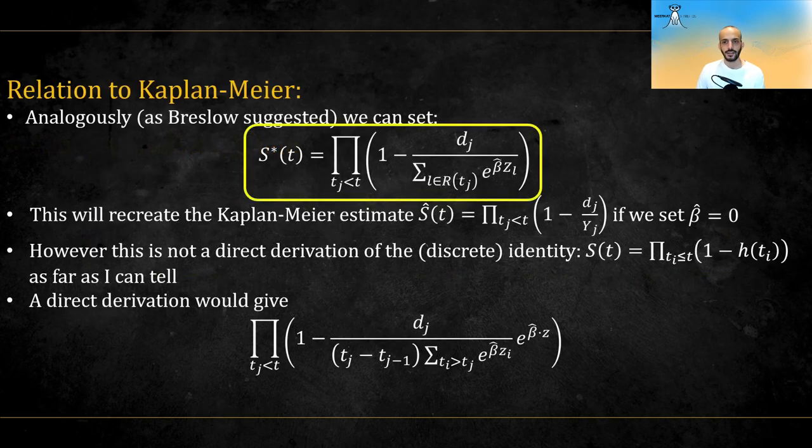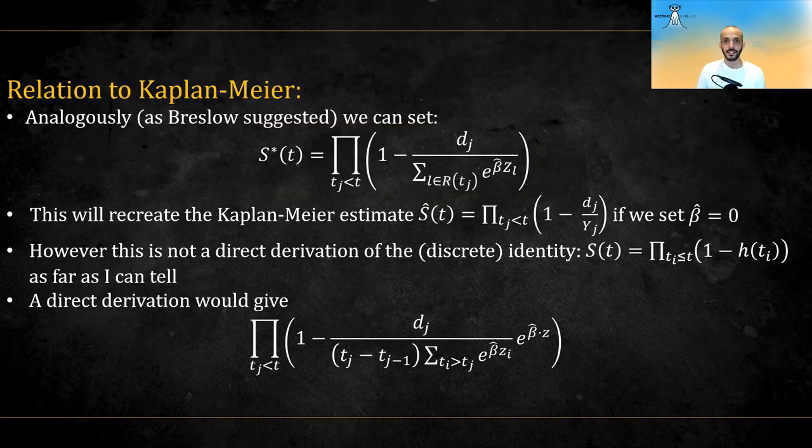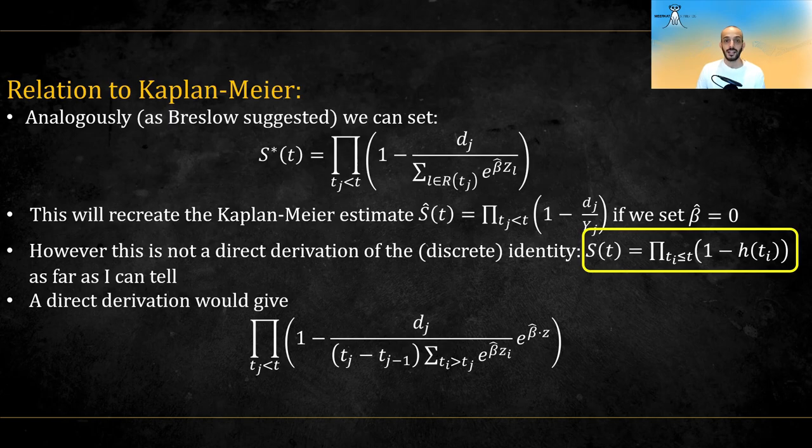And likewise, Breslow suggested to set this to be the survival function, since this will recreate the Kaplan-Meier estimator if we set beta is equal to zero. However, as far as I can see, this is not a direct derivation of the identity given here, but rather a heuristic or analogy. The direct derivation would give this.